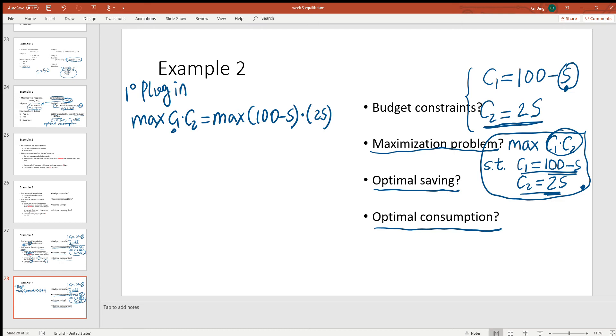So that's plug in. Second step: FOC, which means take the derivative of this and set it to zero. What's the derivative of the first term? It's negative one. We copy the second term 2s. What's the derivative of the second term? It's two, and then we copy the first term, and then set it to zero. So that's FOC. And then step three, we solve it.